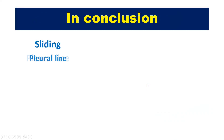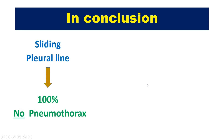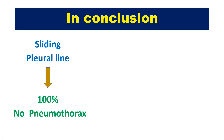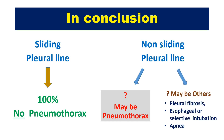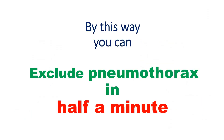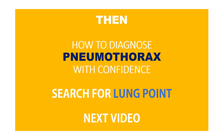A sliding pleural line means 100% no pneumothorax, while a non-sliding pleural line means either possible pneumothorax or other conditions such as pleural fibrosis, selective intubation, or apnea. By this method, you can exclude pneumothorax by lung ultrasound in half a minute.